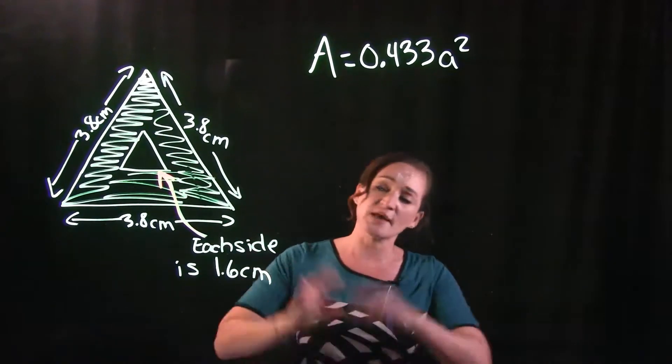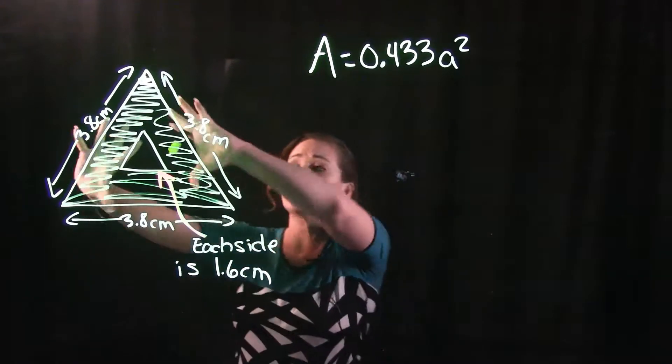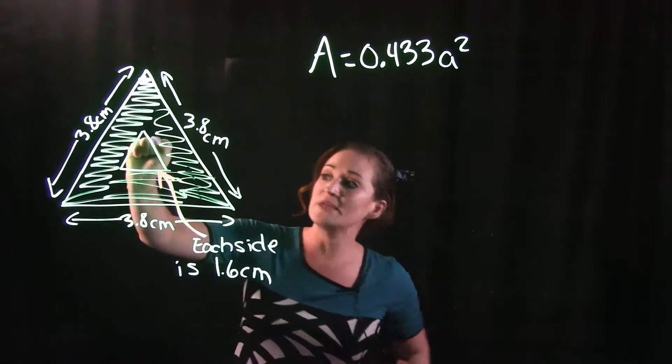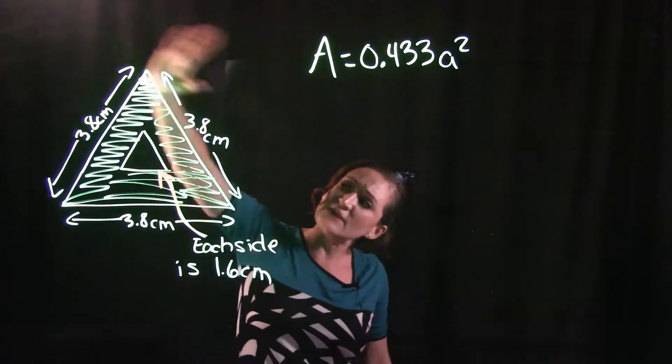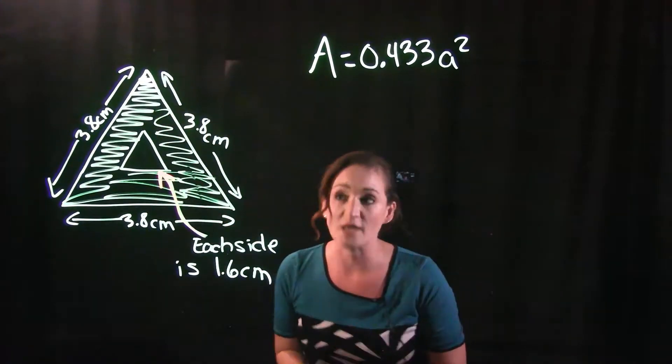And part three is we're going to subtract those together because if we take our big triangle and we subtract this middle piece here, that's what's going to leave us with the shaded portion, which is what we want.